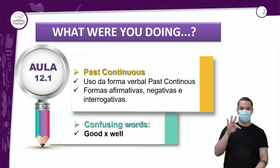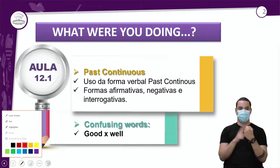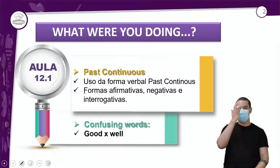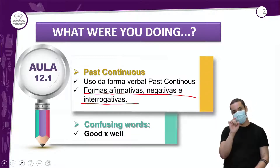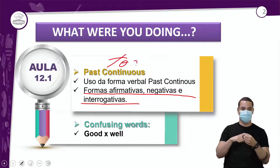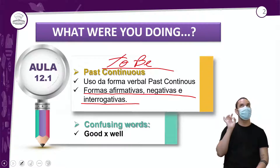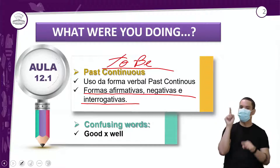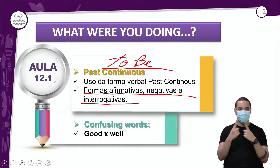Nós vamos ver sobre o uso da forma verbal do past continuous, que é fácil. Formas afirmativas, negativas, interrogativas. E aqui nós vamos voltar a usar o nosso famoso verbo to be, que a galera sabe falar — 'eu só aprendo o verbo to be' — porém, quando é para usar, ele já esquece.